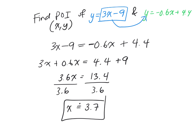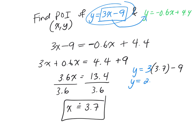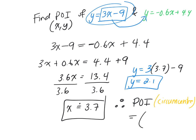Now that we know x ≈ 3.7, plug it into the equation with no decimals to find y: y = 3(3.7) − 9 = 11.1 − 9 = 2.1. So the point of intersection — which is the circumcenter — is approximately (3.7, 2.1).